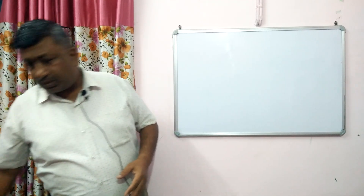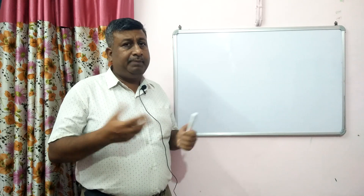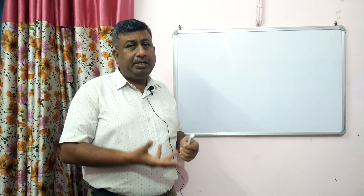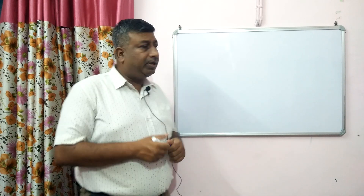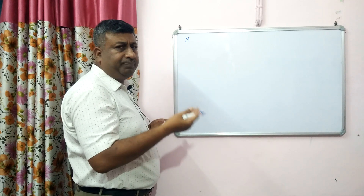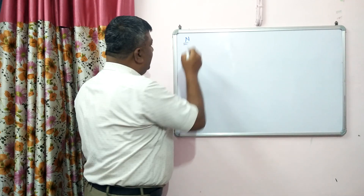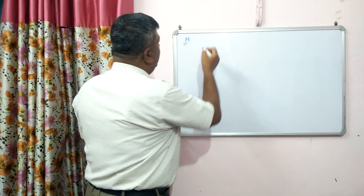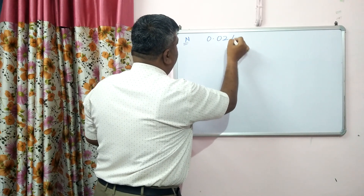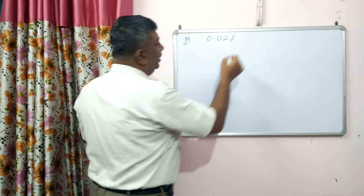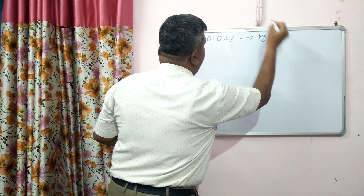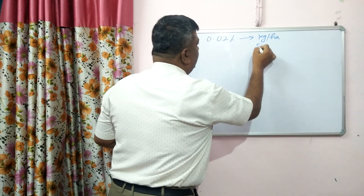So, for example, if a nutrient is given in percentage or PPM, how can we calculate kg per hectare for soil? Consider different nutrients — nitrogen, phosphorus, potassium. Suppose we take the example of nitrogen, and the nitrogen content is 0.02%. Then how much quantity is present in soil in kg per hectare?